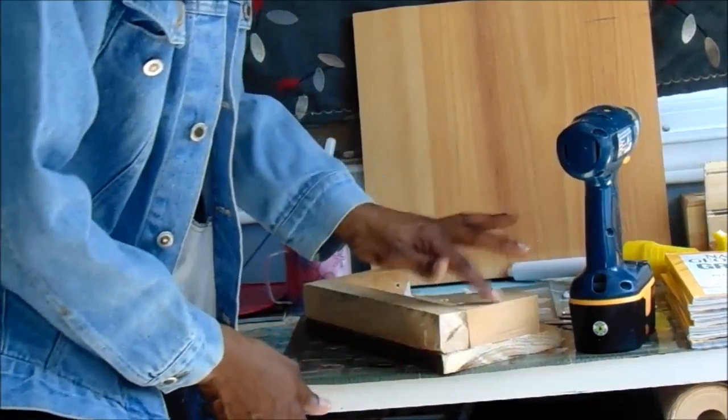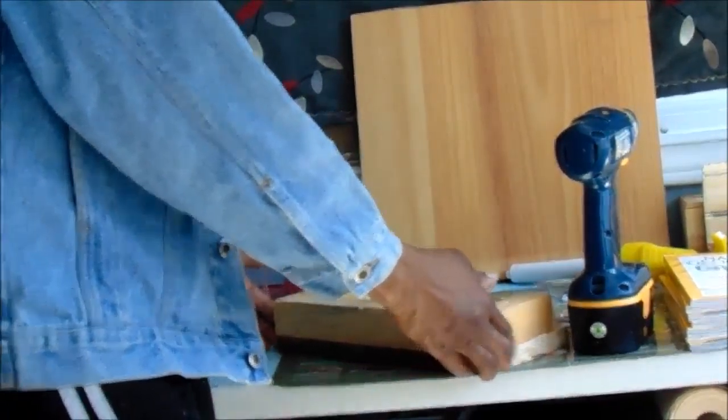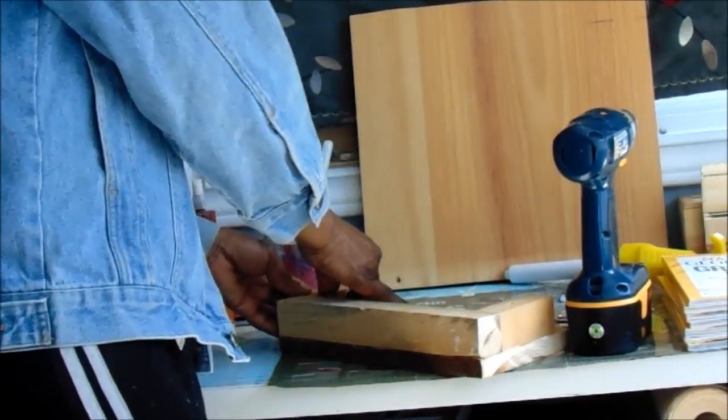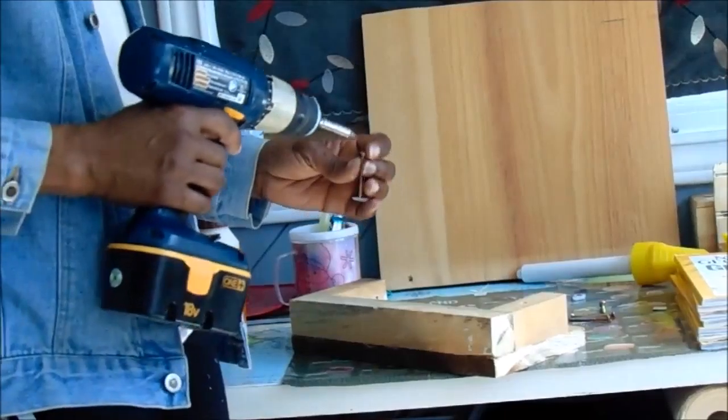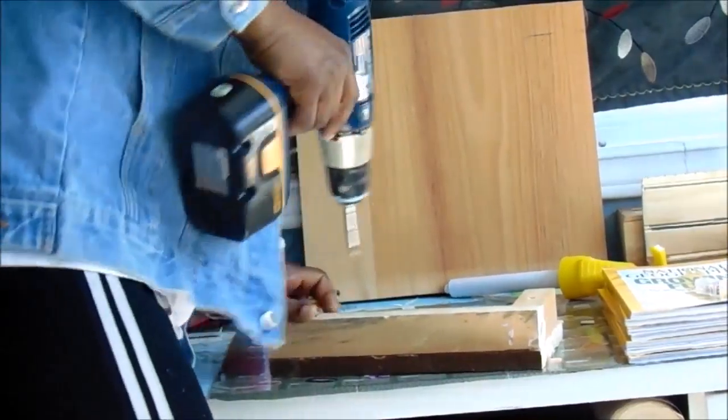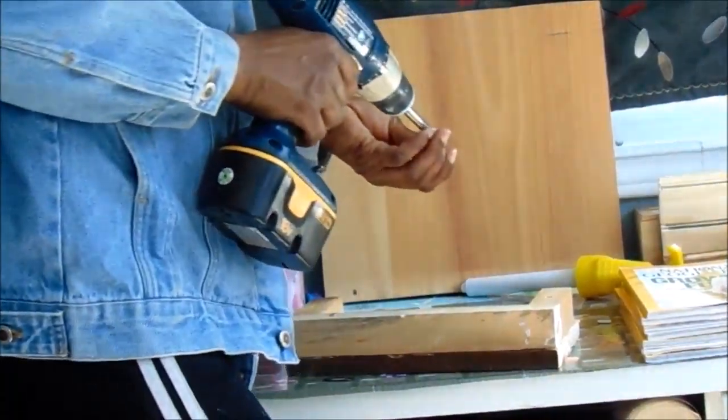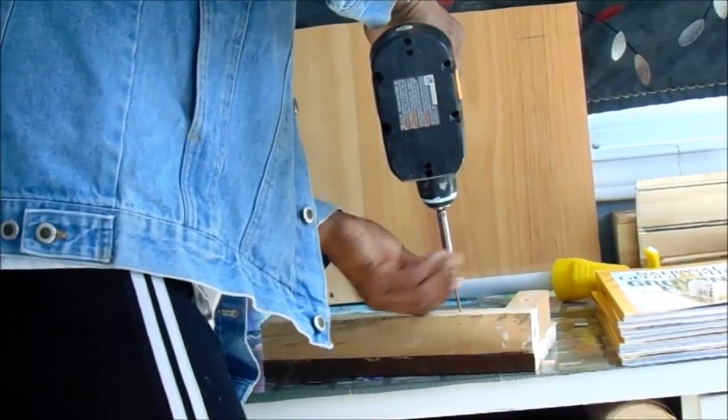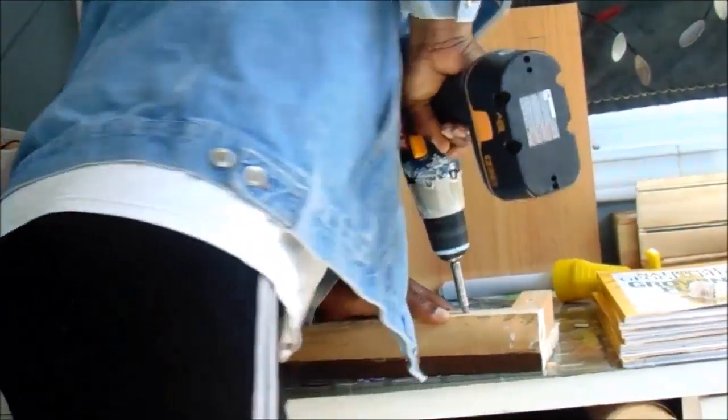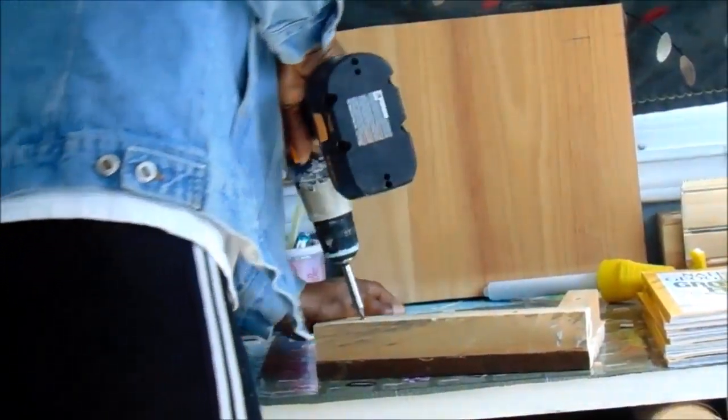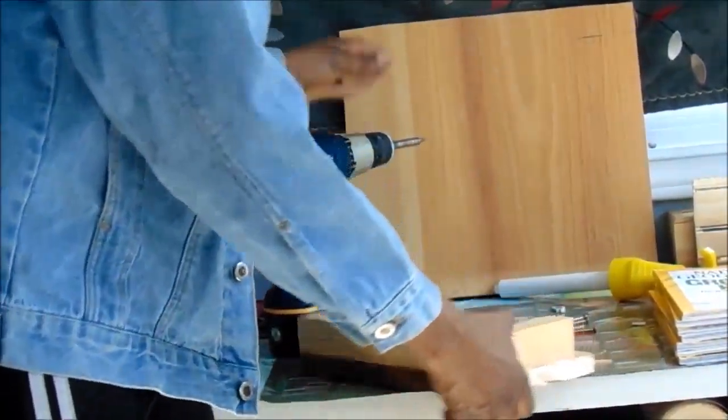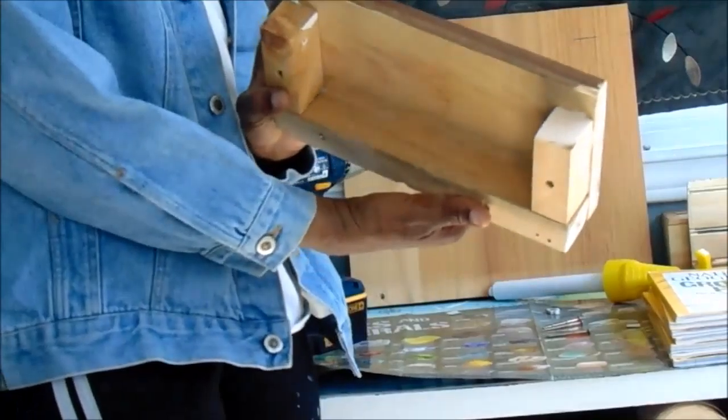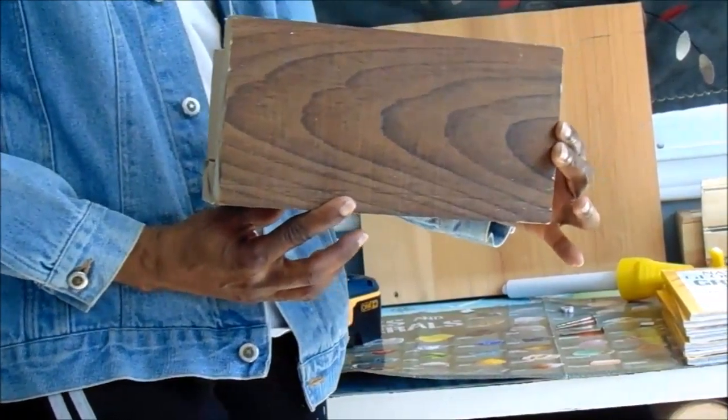Make sure it lines up with the side of the faceplate, and then you do the same thing for the other side. Put a couple screws at the bottom, and now this is what your ledger shelf should look like.